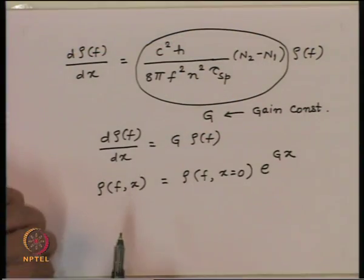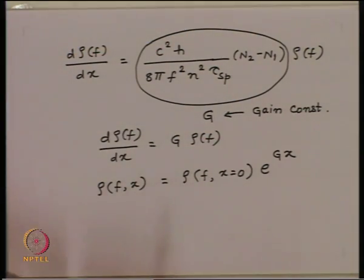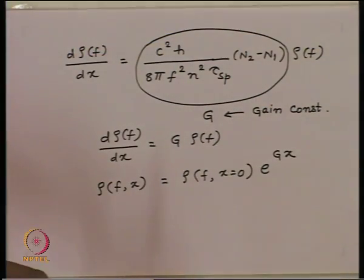If you inject electrons and holes inside the junction, then N2 minus N1 essentially means that I have electrons and holes available for recombination. They can recombine, and once photons are generated because of this spontaneous recombination, these photons can trigger the stimulated process and much faster recombination will take place, giving stimulated emission.